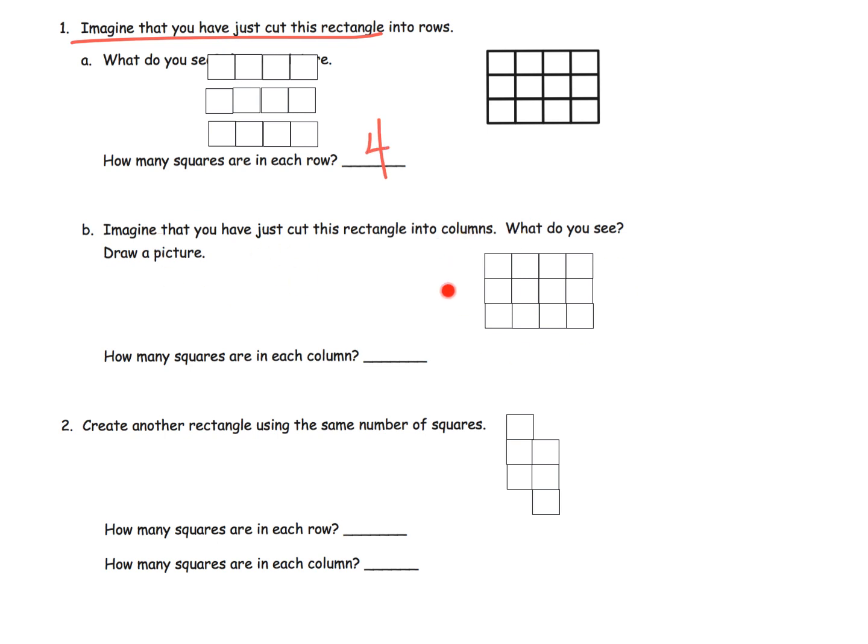Imagine same rectangle, but now we cut it into columns. What would our picture look like? Now our picture would look like something like this. So how many squares are in each column? We can see it's three. Parents and teachers, the idea of this is just helping students practice their visual, that spatial visualization, their ability to visualize what's going on.